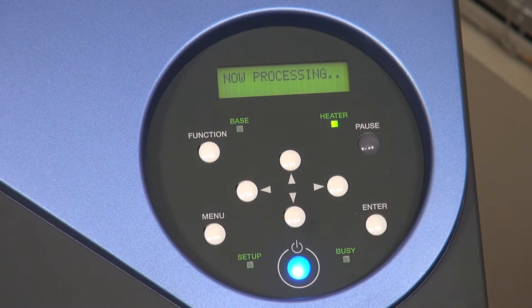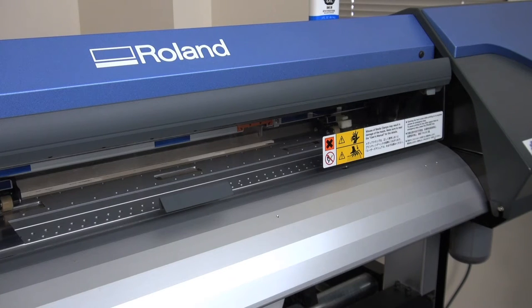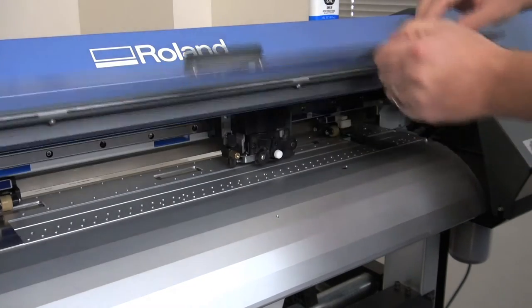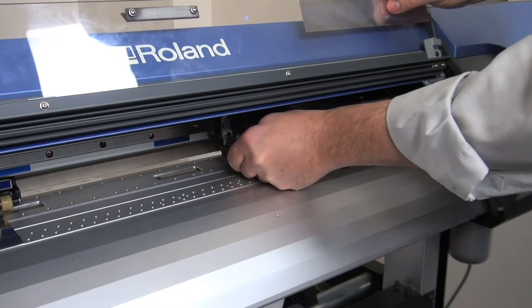We press enter and this will bring over the cutting head assembly so we can access the blade holder. Once it's in the middle of the machine, open the front cover and remove the blade holder.